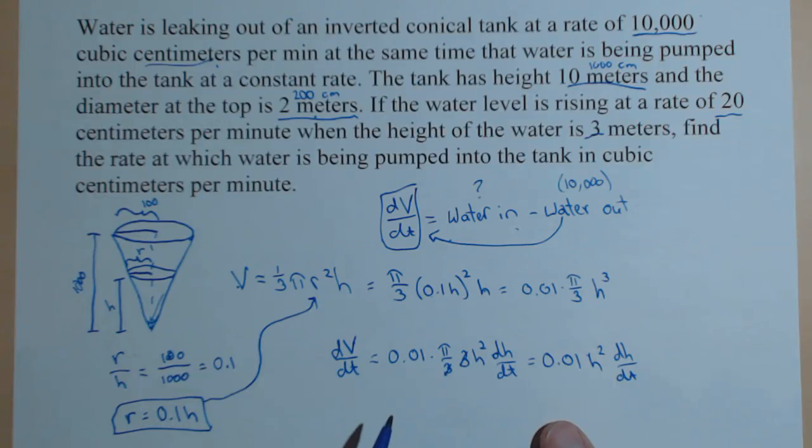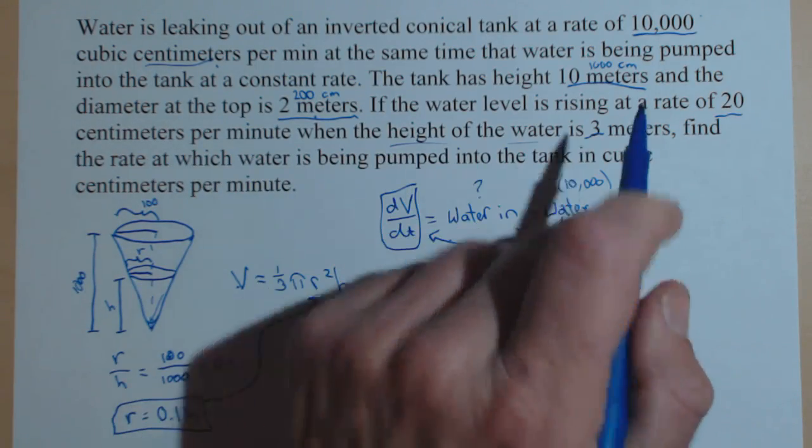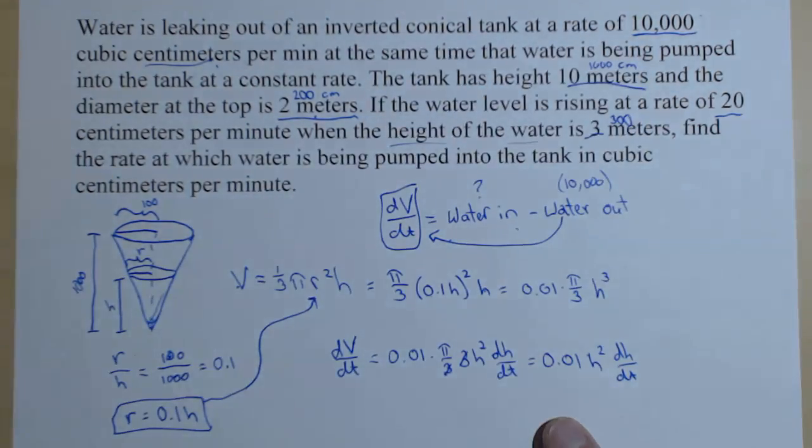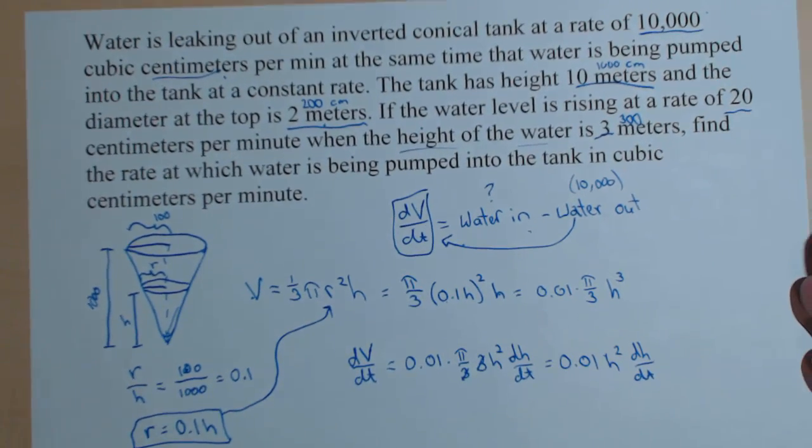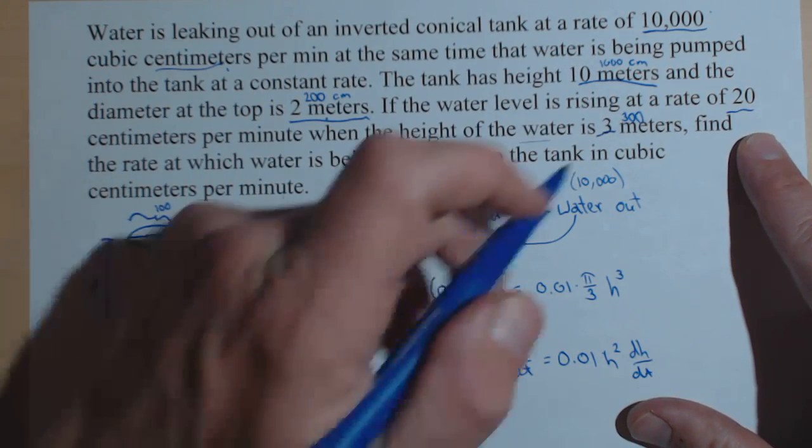Now, we just need the rest of our measurements. So, we're doing this when the height of the water is 3 meters. And just like we converted before, that's 300 centimeters. And we also know that the water level is rising at 20 centimeters per minute.